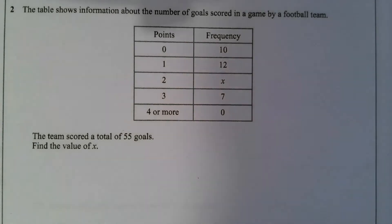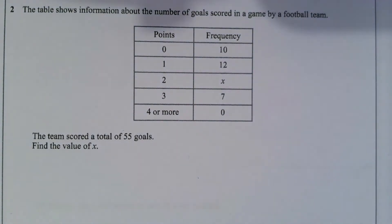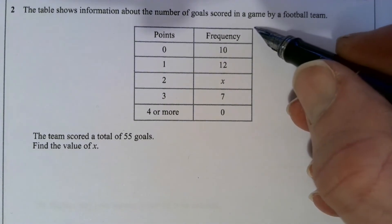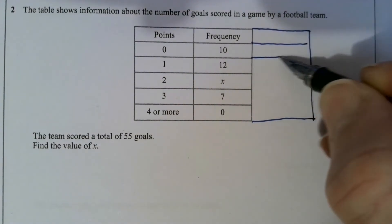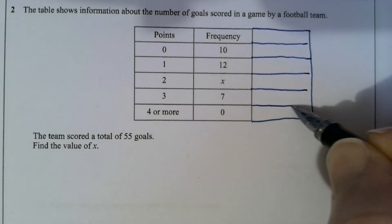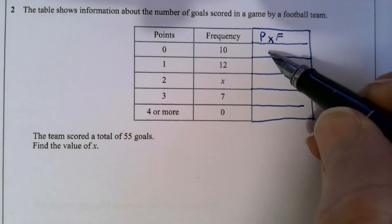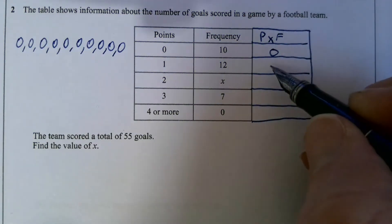Here's our second frequency table — pause the video and have a go. The table shows information about the number of goals scored in a game by a football team. Quite often the team scored no goals whatsoever. So for zero goals: 0 × 10 = 0. For one goal: 1 × 12 = 12. There are going to be 12 ones making 12 goals altogether.